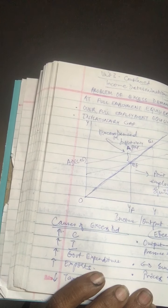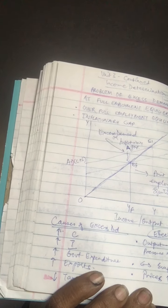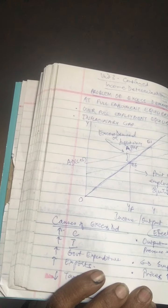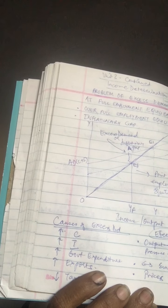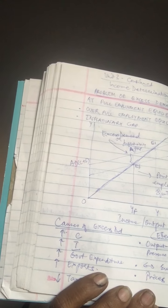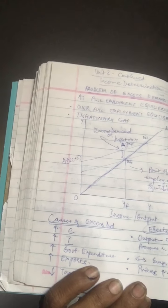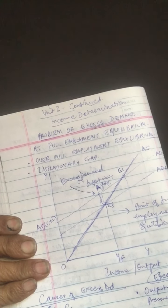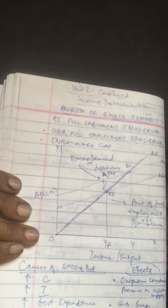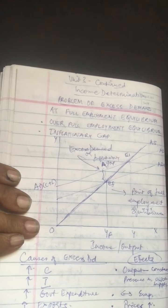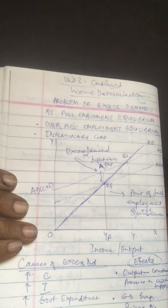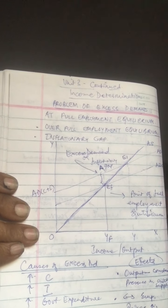The desired level of aggregate demand for full employment is indicated by ADF. Corresponding to this level, equilibrium is struck at point E where AD equals AS. The current level of AD is indicated by AD1, which depicts excess demand in the economy. Excess demand equals AD1 minus ADF, that is AE, which is the measure of the inflationary gap or excess demand.